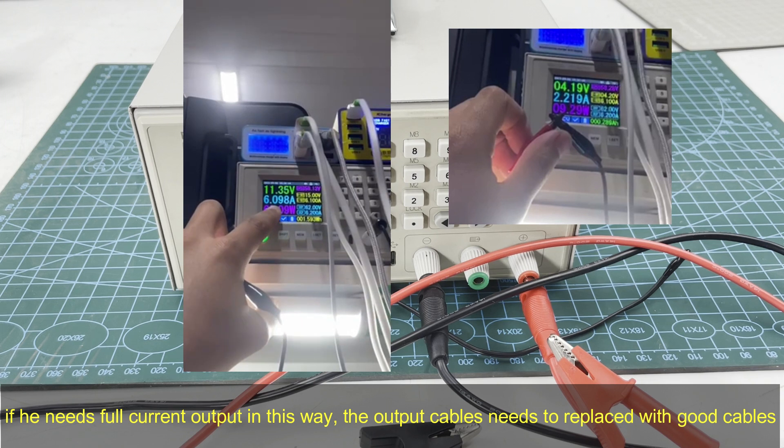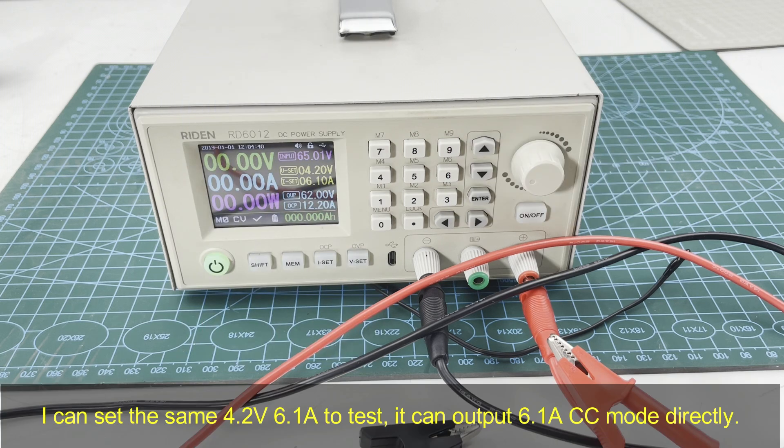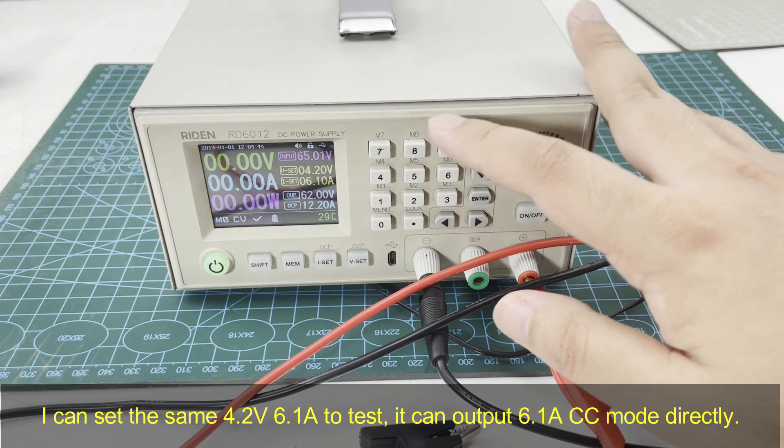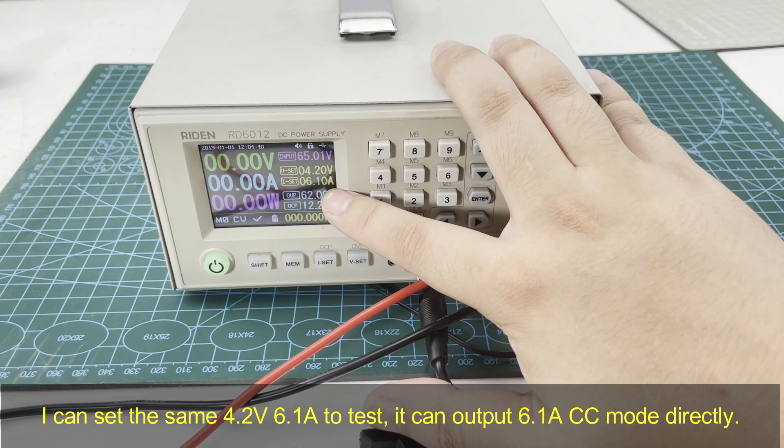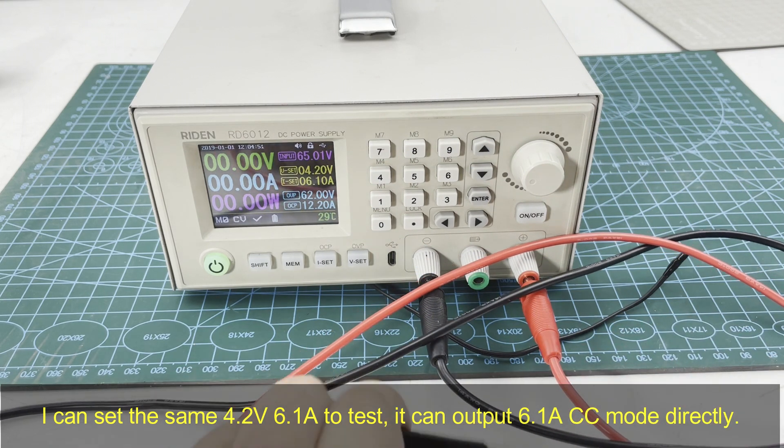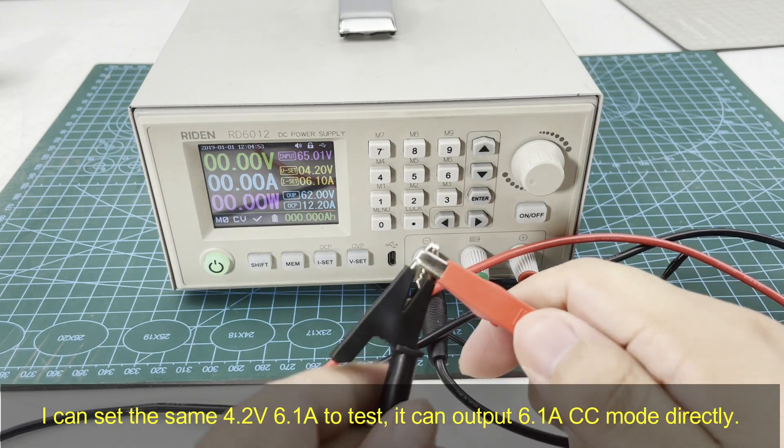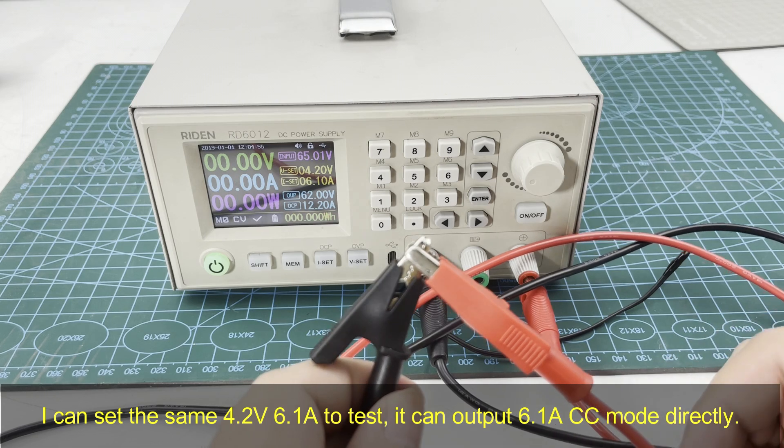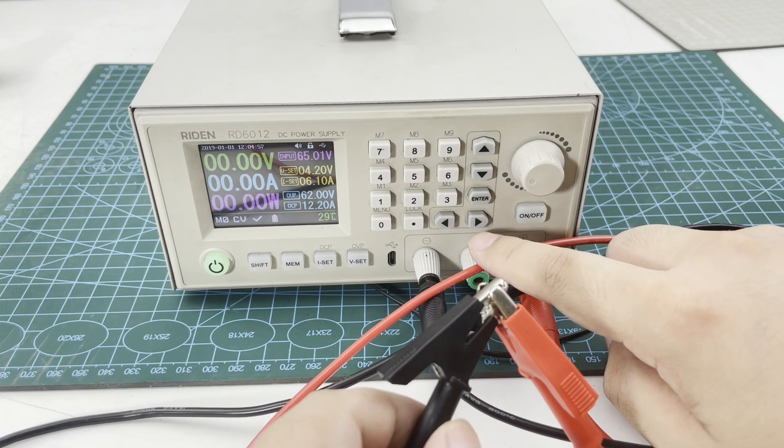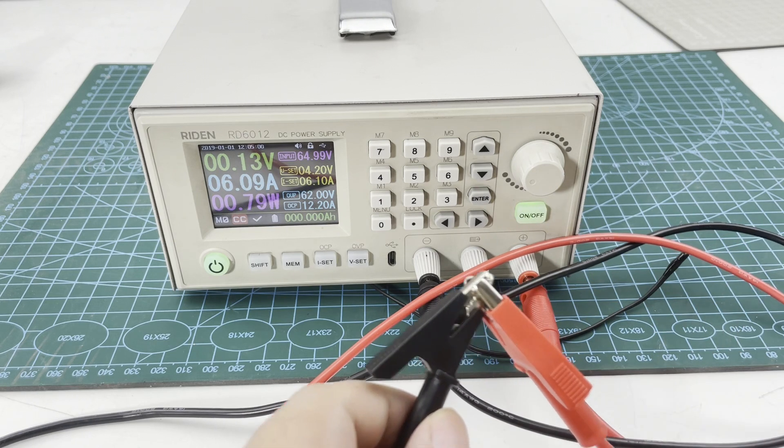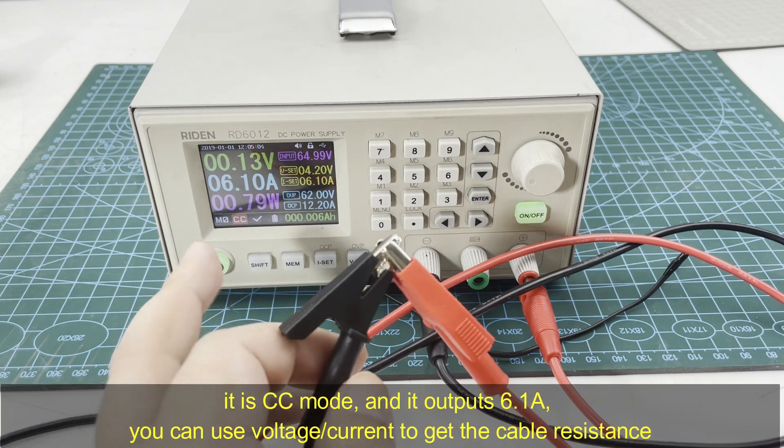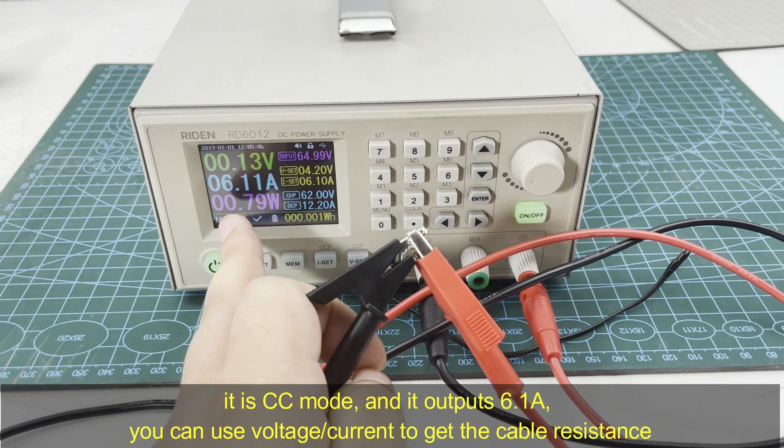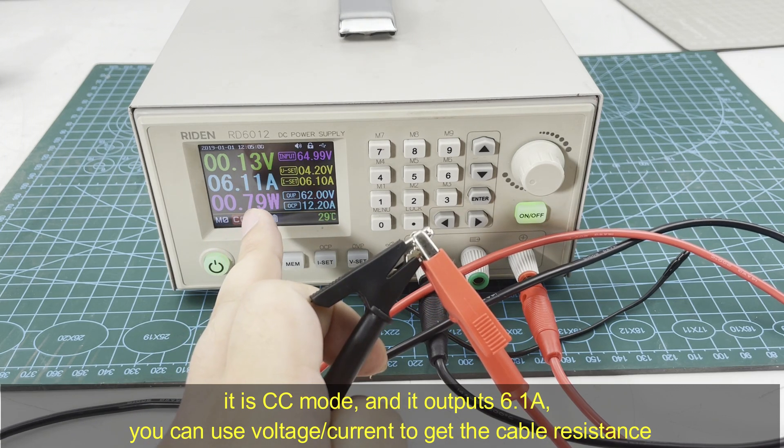You can see here I set the same 4.2 volts and 6.1 amps, and I shorted the output terminals. You can see here it is easy, more than 6.1 amps output.